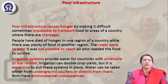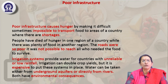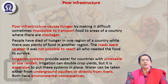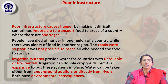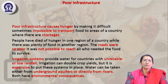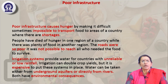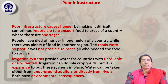Poor infrastructure causes hunger by making it difficult — sometimes impossible — to transport food. In one region food may be sufficiently available, but due to a poor transport system and lack of communication, it cannot be taken to another place for people's consumption. Roads are so poor that it is not possible to reach from one region to another, and even when food is transported, much of it is wasted because of all kinds of barriers and time-consuming factors.